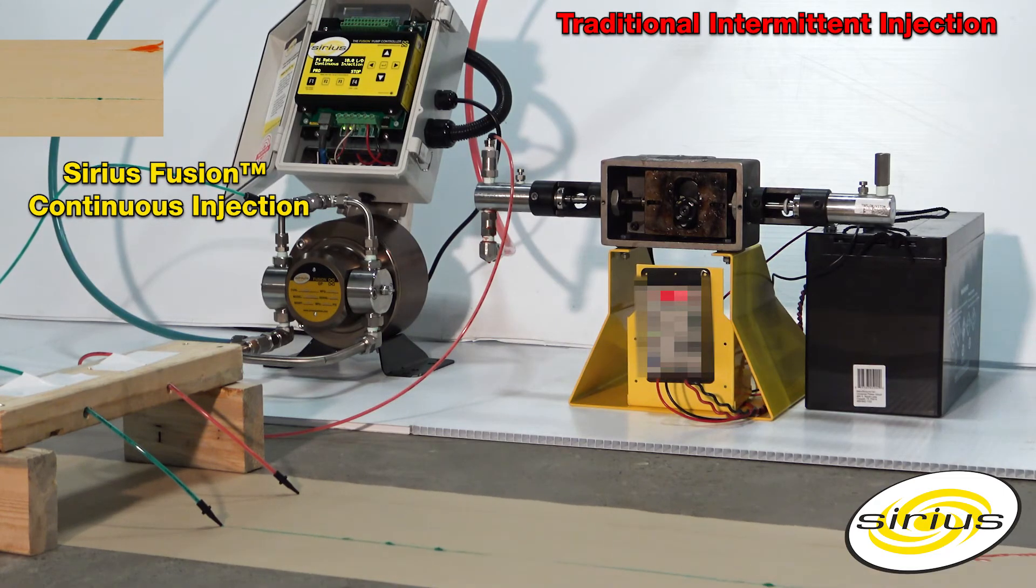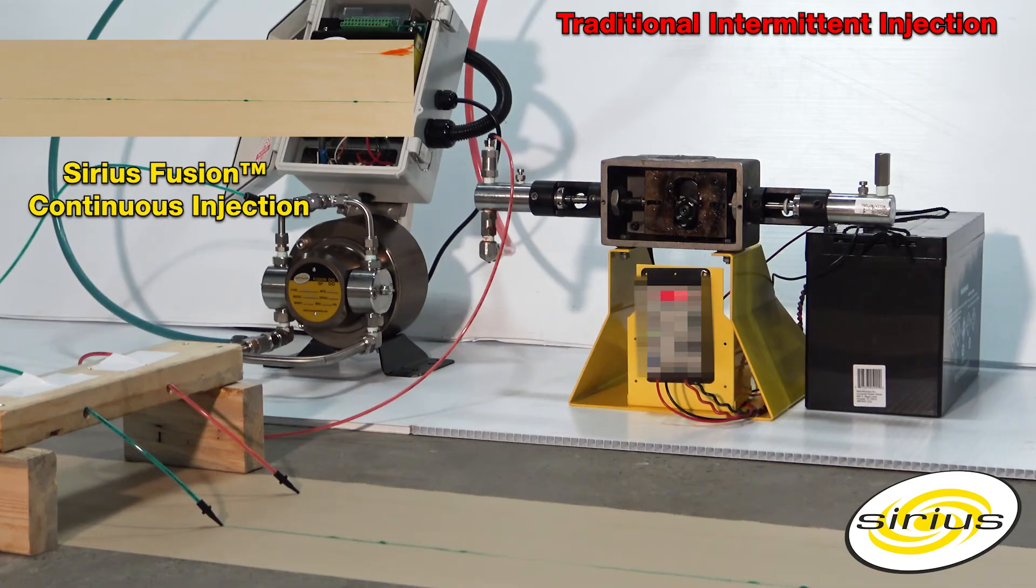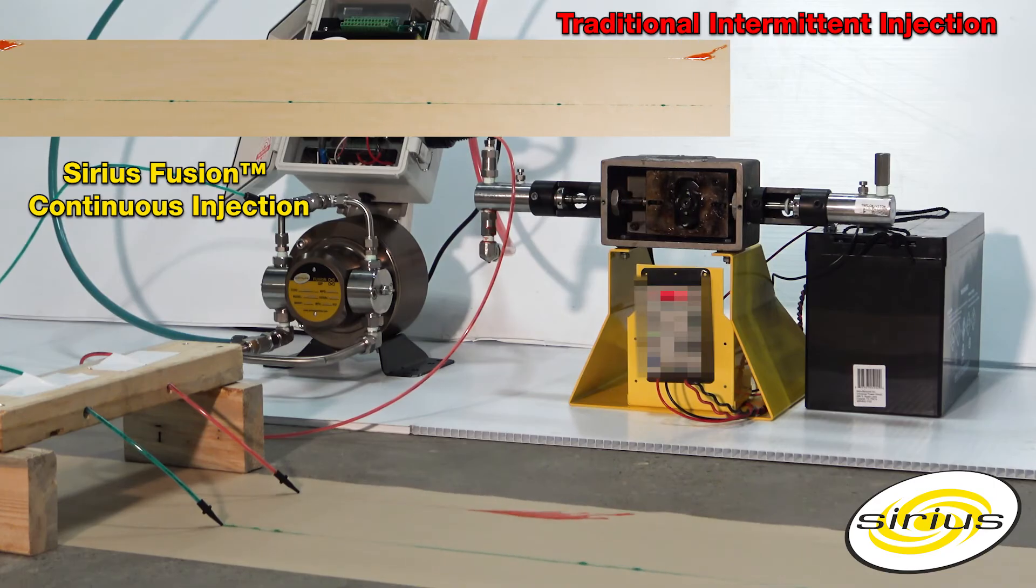Now you can visualize how the continuous flow Sirius pump provides constant effective treatment of the process. This is achieved using a fully variable speed BLDC motor, proprietary control technology, and a precision short stroking pump.